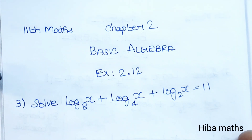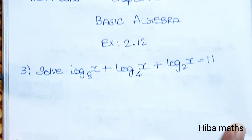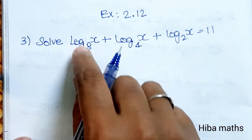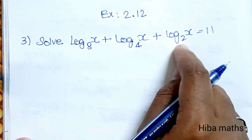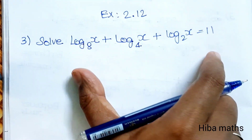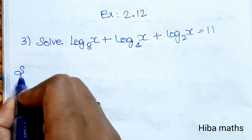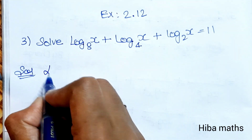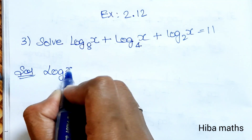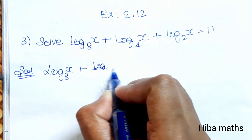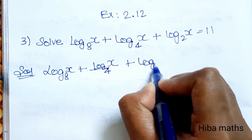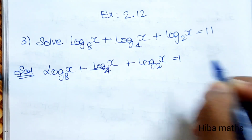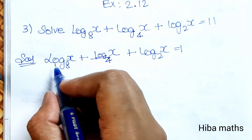Hello students, welcome to Hibamax 11th standard Maths, Chapter 2 Basic Algebra, Exercise 2.12 third question. Solve: log base 8(x) plus log base 4(x) plus log base 2(x) equals 11. Now we will solve the solution. Given: log base 8(x) plus log base 4(x) plus log base 2(x) is equal to 11.